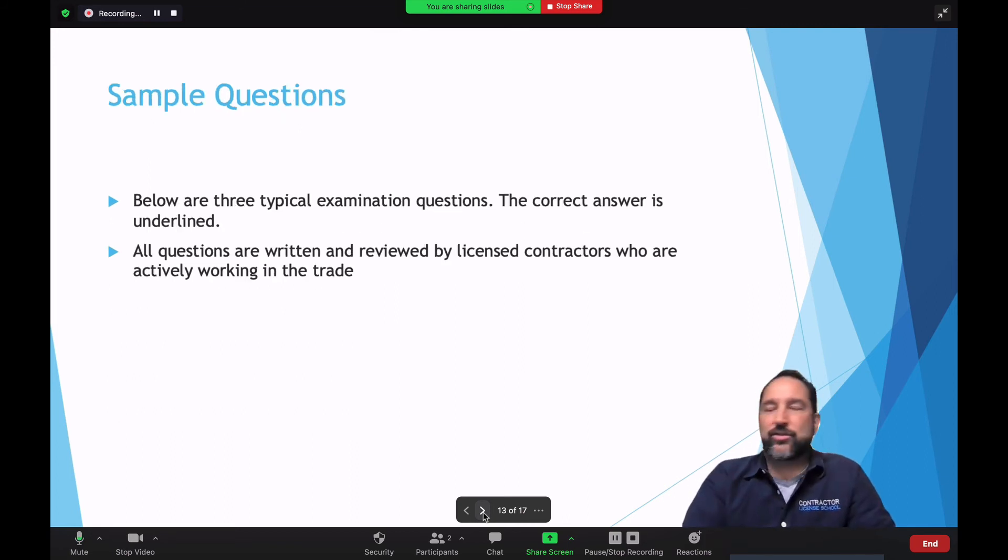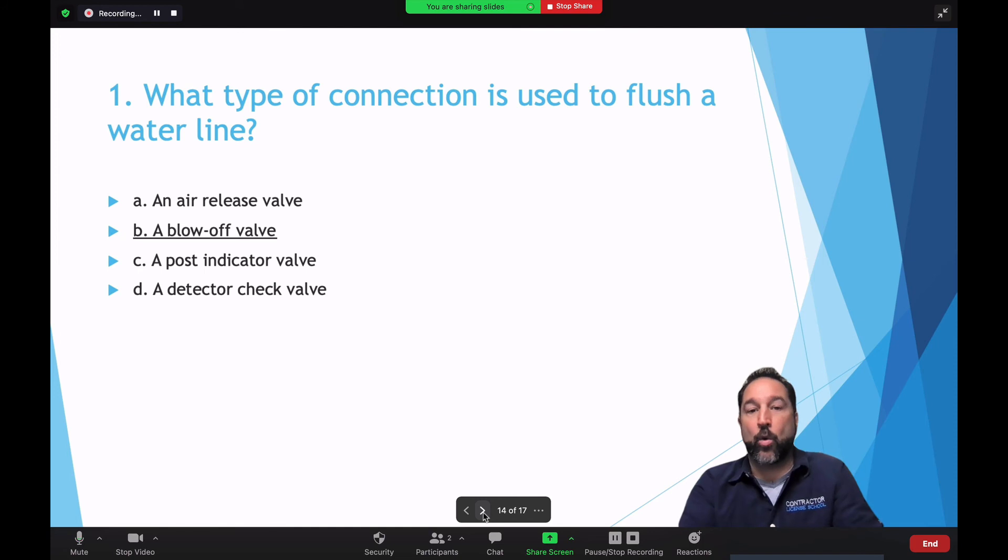Now here's just a few sample questions. Now below are three typical examination questions that you're going to find on the state exam for the A, general engineering trade. The correct answer is you're going to see is underlined. And all questions are written and reviewed by licensed contractors who are actively working in the trade. So let's take a look real quick. So here's an example of a question. What type of connection is used to flush a water line? A, an air release valve. B, a blow off valve. C, a post indicator valve. D, a detector check valve. Well, ding, ding, ding. Of course, you know, it is B, the blow off valve. So keep that in mind. That's just one example.